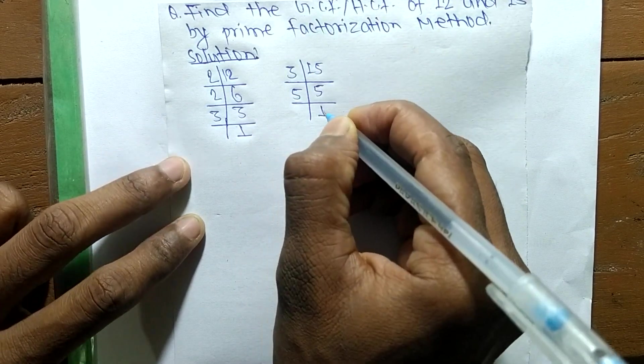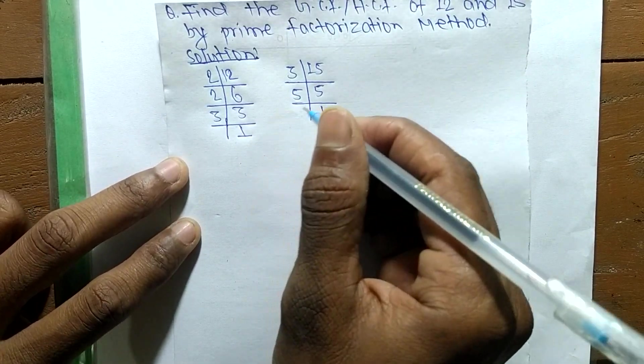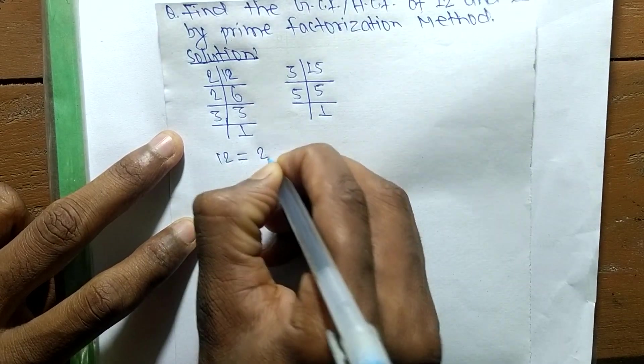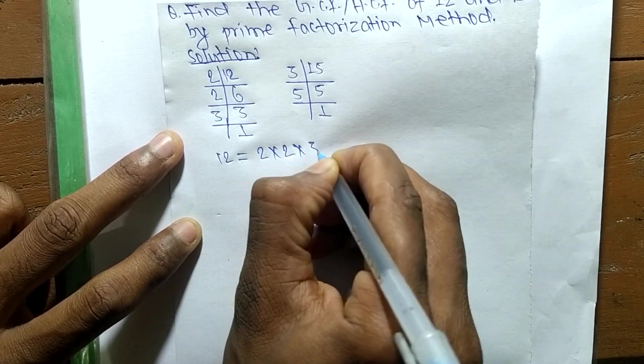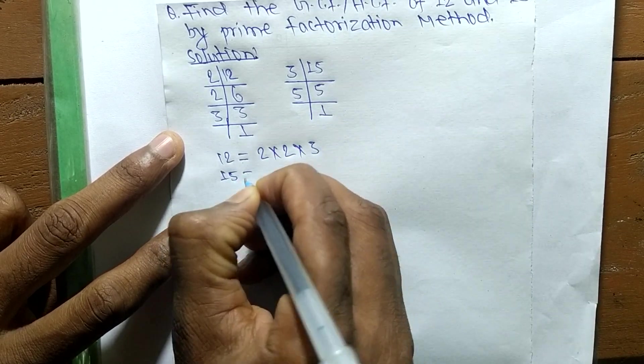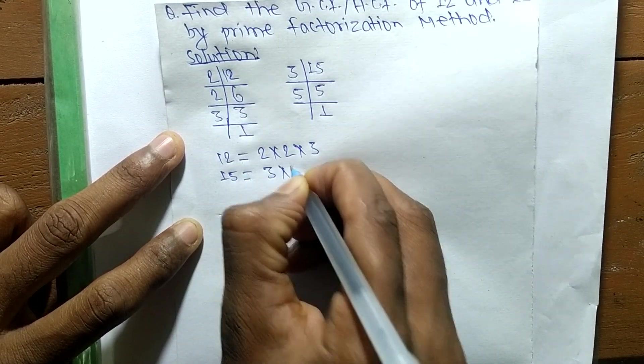So from these prime factors, we can write 12 is equal to 2 times 2 times 3. So in the same way, 15 is equal to 3 times 5.